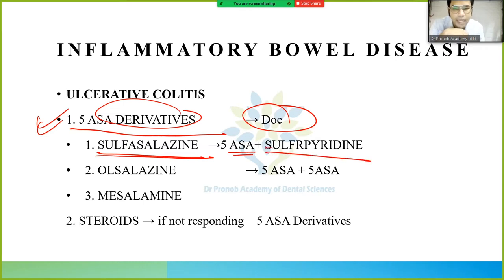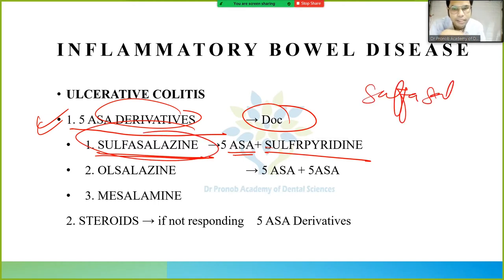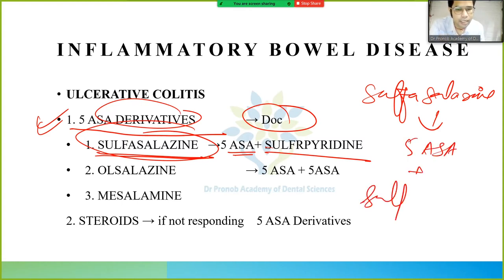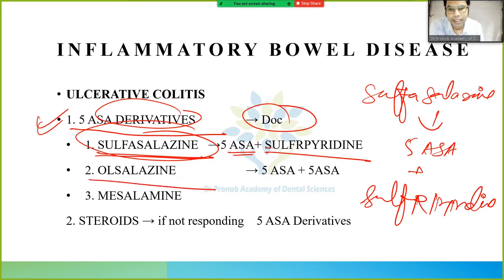Sulfasalazine is a combination of 5-ASA plus sulfapyridine. Similarly, alsalazine is 5-ASA plus 5-ASA. These are the 5-ASA derivatives used in ulcerative colitis treatment.